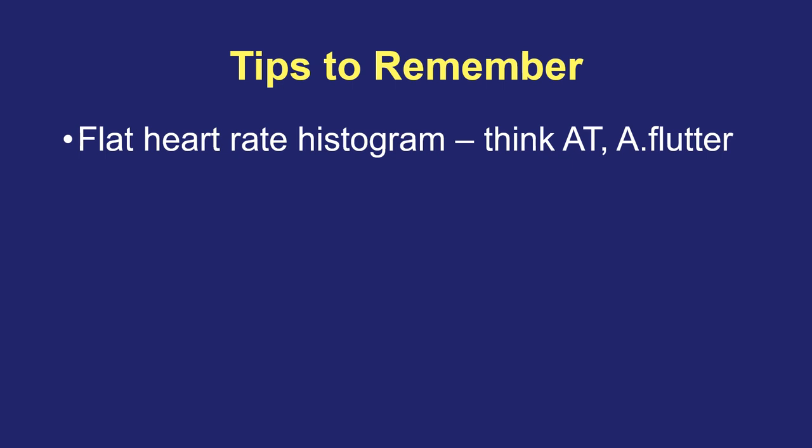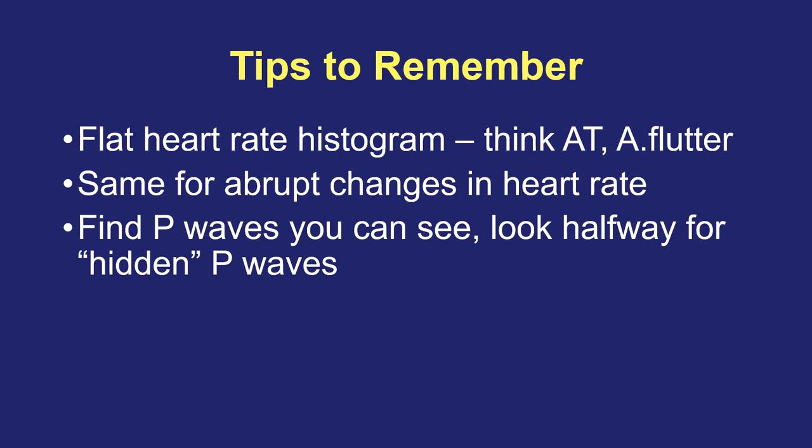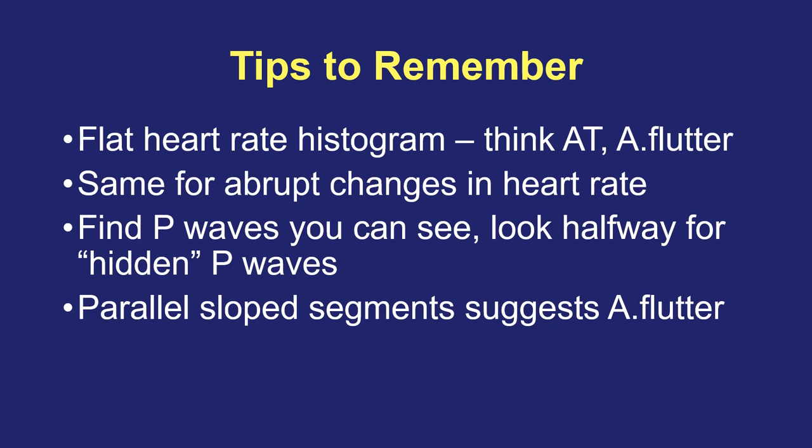The tips to remember from this module on atrial tachycardia and atrial flutter: a flat heart rate histogram is not at all suggestive of sinus tachycardia — think atrial flutter with one-to-one or two-to-one conduction. Abrupt changes in heart rate also suggest atrial flutter or tachycardia, since sinus tachycardia has a much more gradual upslope as catechols change. Look for hidden P waves using calipers to find the halfway point and identify a P wave or flutter wave feature mimicking the more obvious ones, possibly hidden by the T wave or preceding QRS. Parallel sloped segments are another tell for two-to-one atrial flutter.